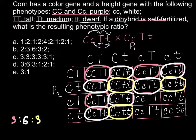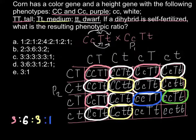Let me change the color once again. Here we have white and tall — and this is going to be only one. So: 1 white and tall. We also have white and medium here, and white and medium here, giving us 2. And the last combination is white and small (dwarf), which is also 1.